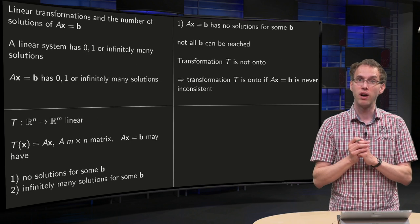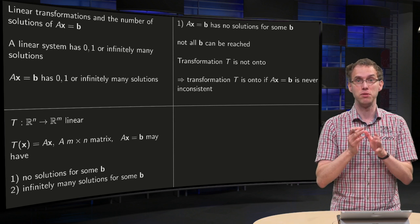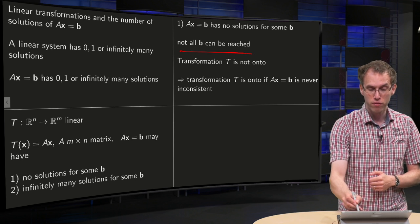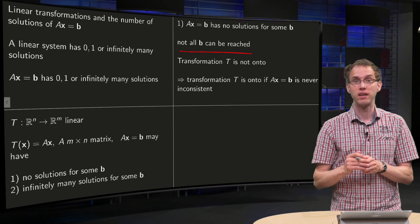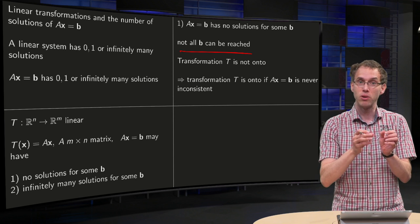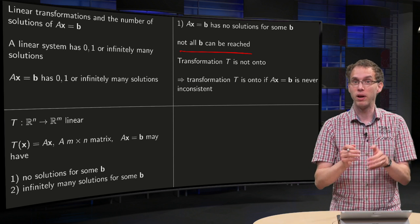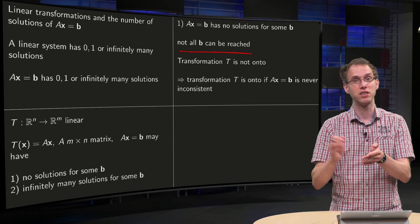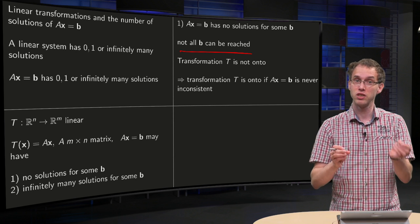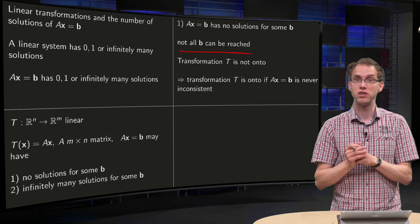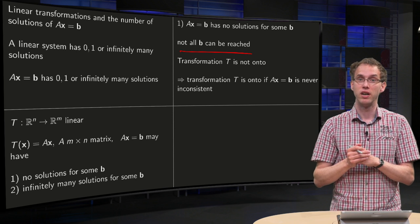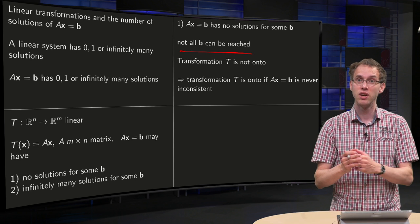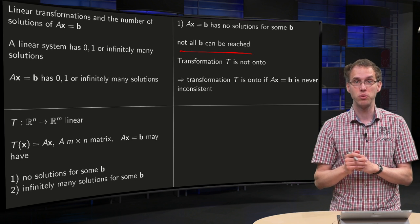Suppose Ax equals b has no solutions for some b — so the system is inconsistent for some b. That means not all b in your codomain can be reached. For some b's there is no x such that Ax equals b, meaning there is no x such that t(x) equals b. So that b is in your codomain but not in your range, meaning you cannot reach all b.